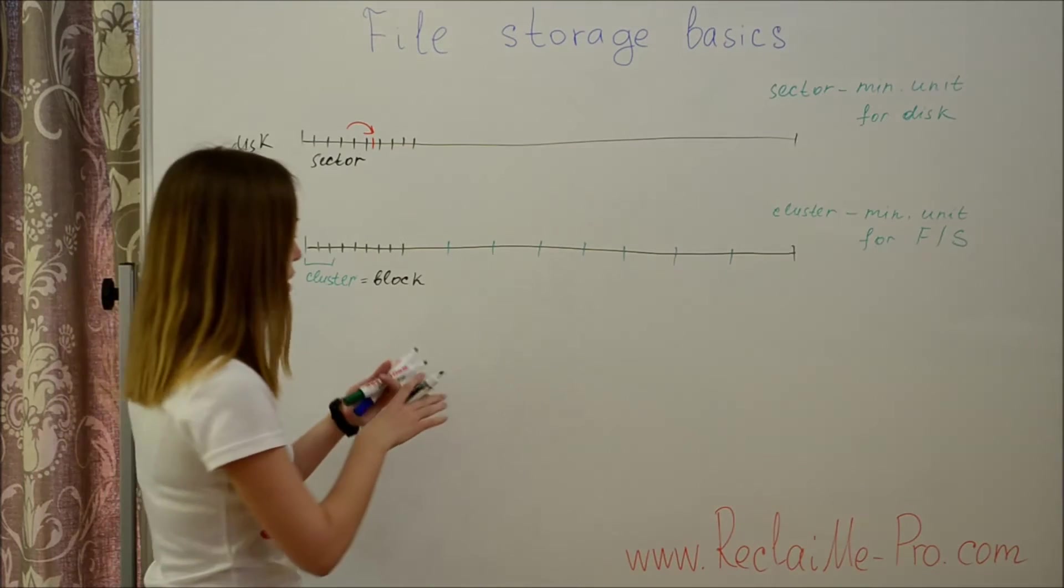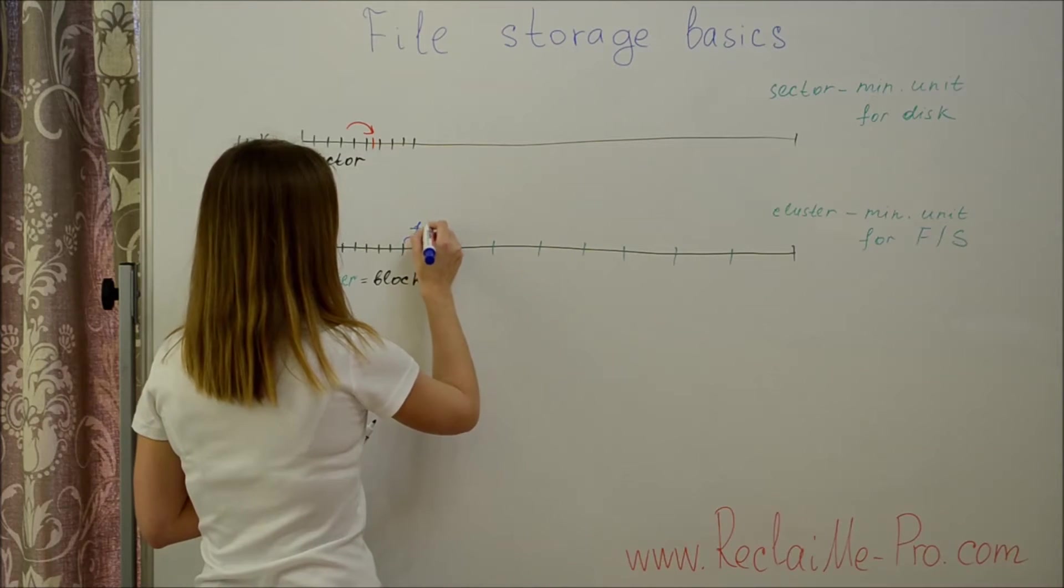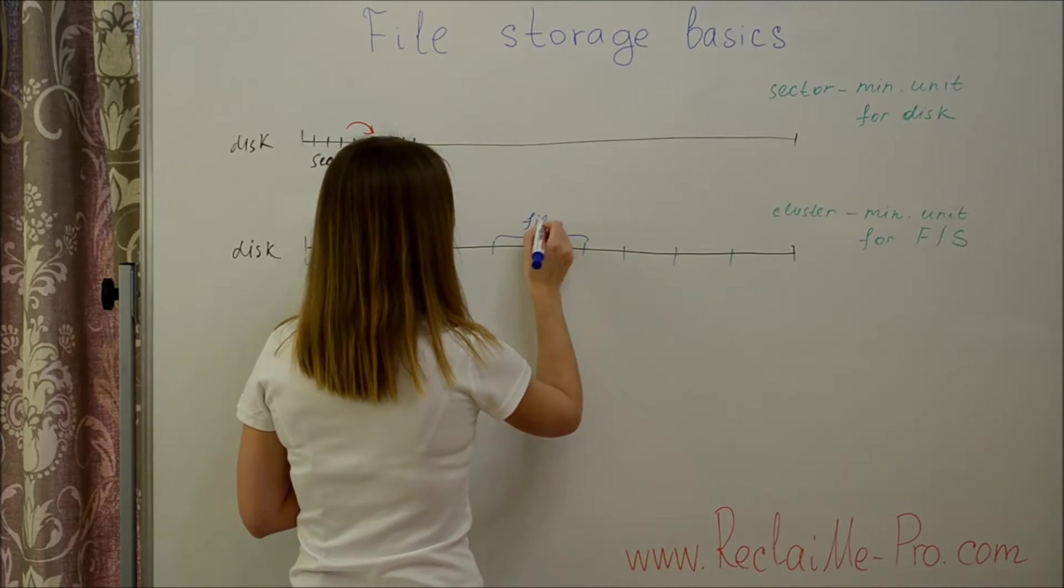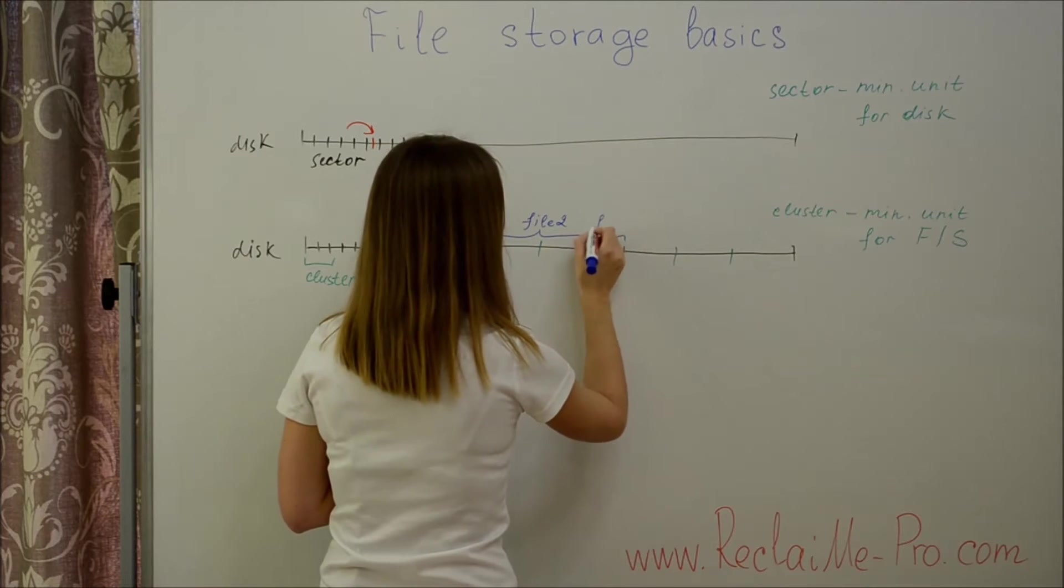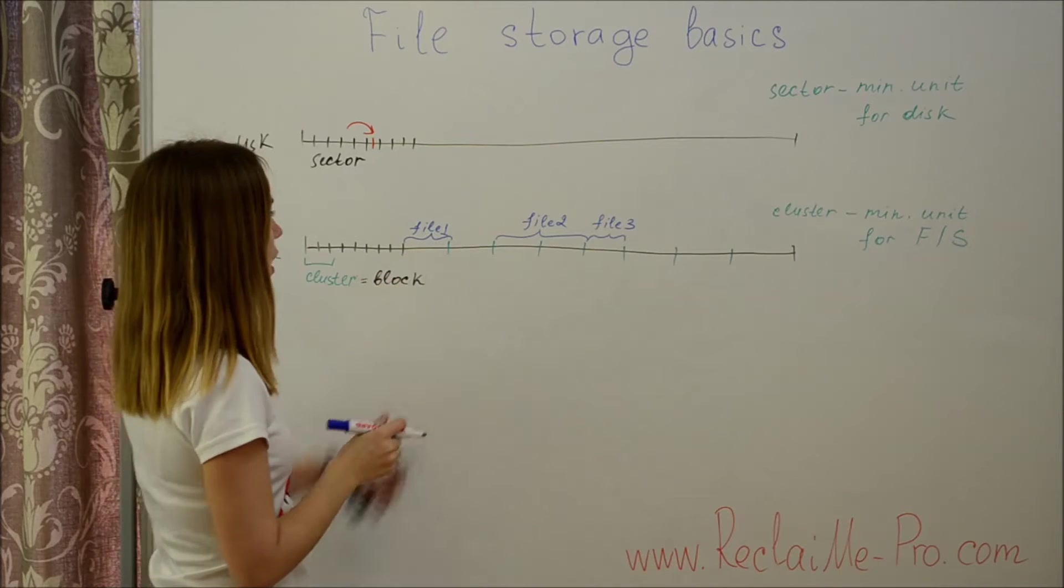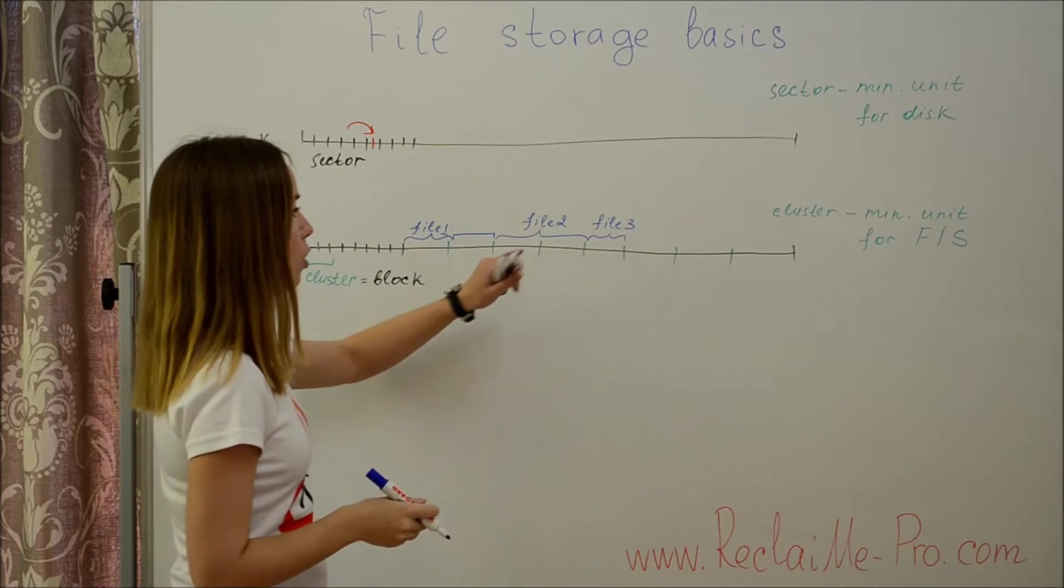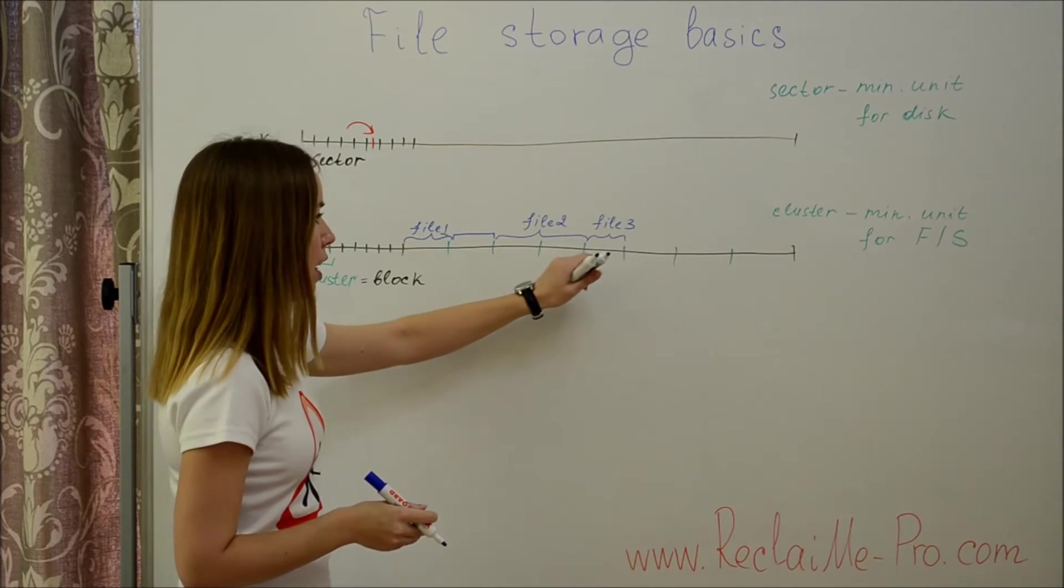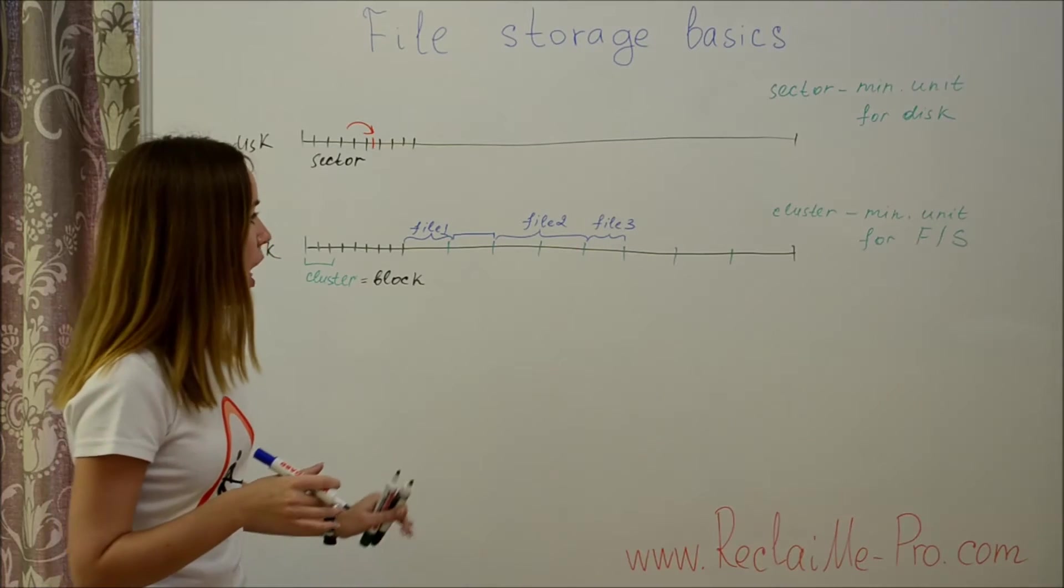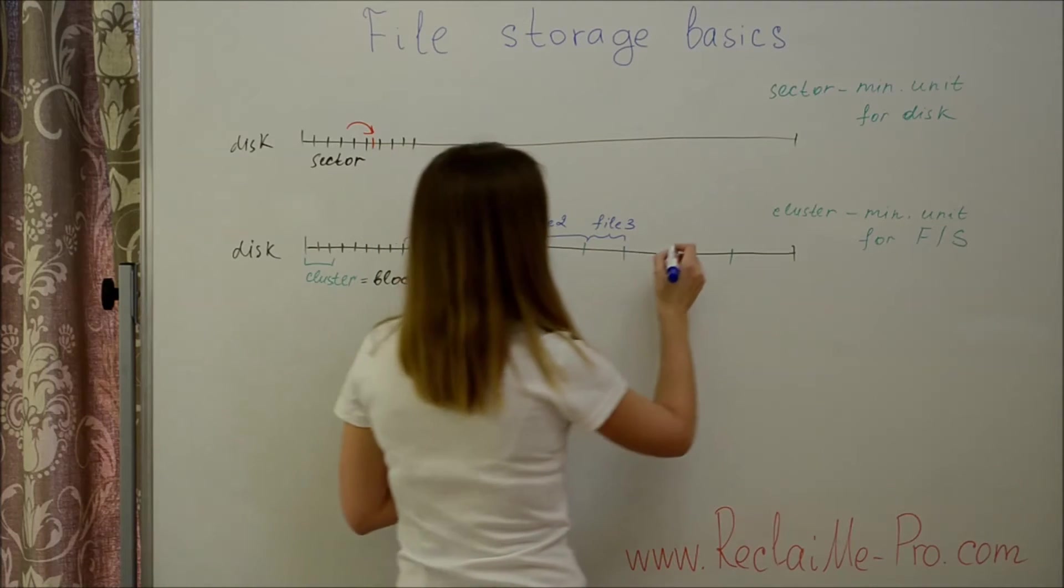Let's imagine that we have three files stored on a disk: File 1, File 2, and File 3. If we need to append data to file 1, a filesystem allocates this cluster. But if we need to append data to file 2, a file system cannot allocate the next cluster because it has already been used by file 3. And a file system allocates another non-contiguous cluster, for example this one.